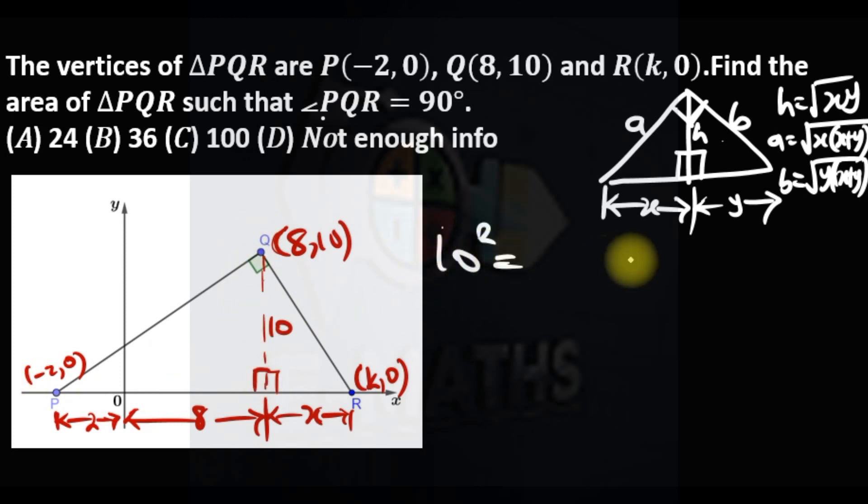So from this you can see that 10 squared, which is like H squared, equals 10 times X. That's using this first one. Solving for X, X is 10. Therefore, the area of the triangle we are looking for PQR...